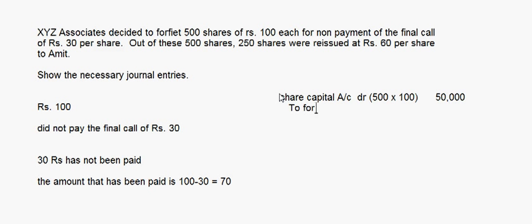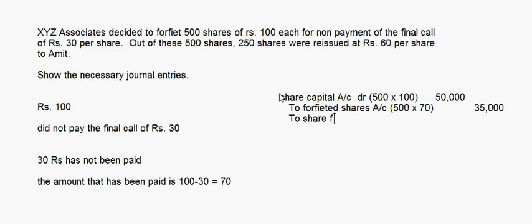To Forfeited Shares Account — this is the amount that has been paid: 500 into 70, which is 35,000. Now comes the reissue part. The reissue is not of all the shares — out of these 500 shares, only 250 shares were reissued.